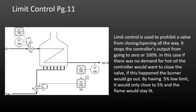In this case, if there was no demand for hot boil, the controller would want to close the fuel control valve. If this happened, the burner would go out, which is problematic because you'd have to go through a startup process. By having a 5% low limit entered into the controller, the valve would only close to 5% minimum and the flame would stay lit. That's a good example of a low limit control application.